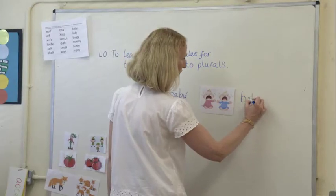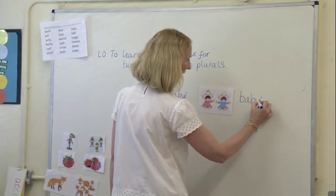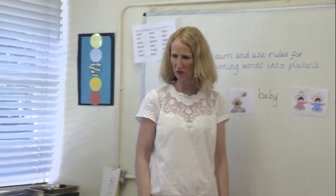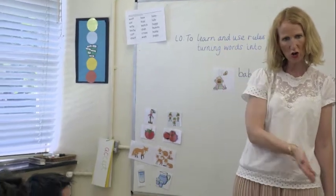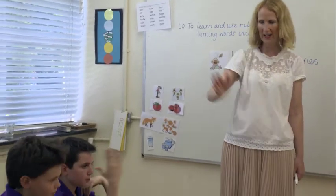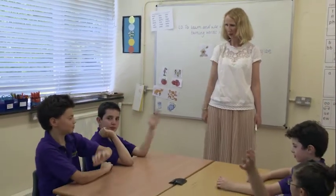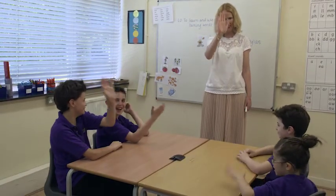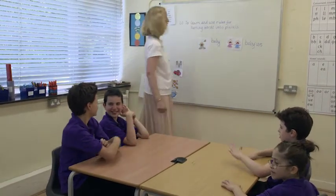We knock off the Y and add IES. Can we all just have a little action for this? Can we knock off the Y and add IES? Knock off the Y and add IES. Using actions is really important — children like to be moving around anyway. It gives them that kinesthetic cue and also means they're participating in the learning.